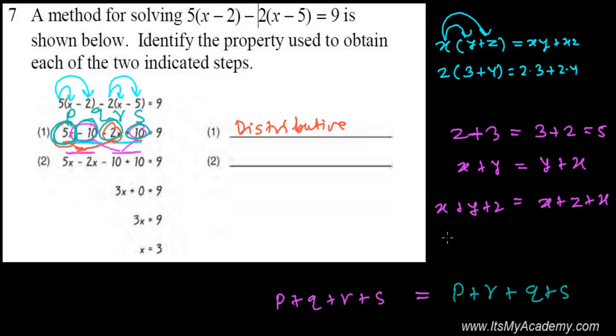This law is called actually commutative law. So here it simply says you have 5x, and then plus it is minus 10, and then you have minus 2x, and then plus 10.